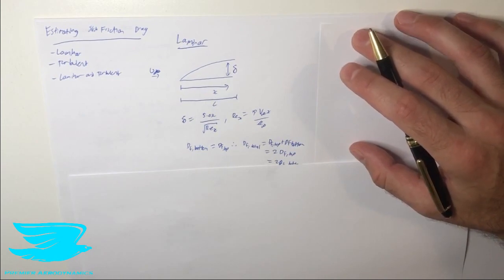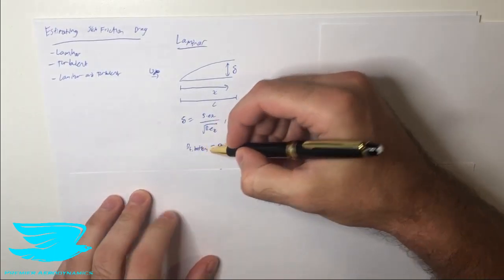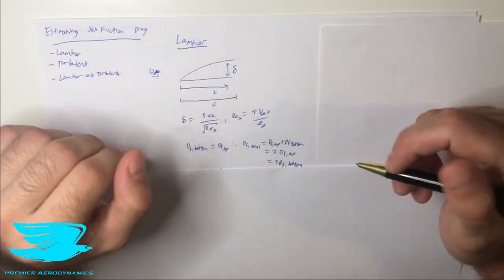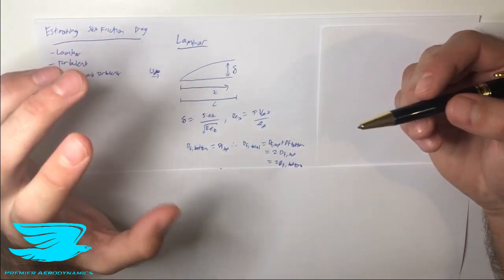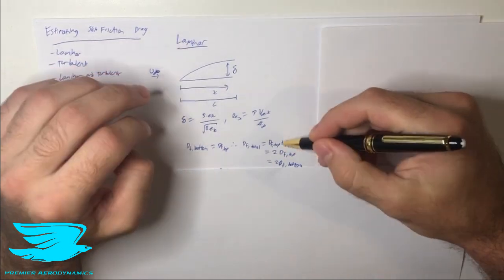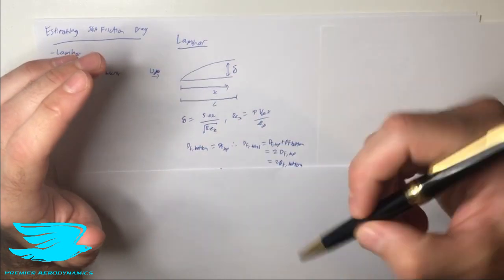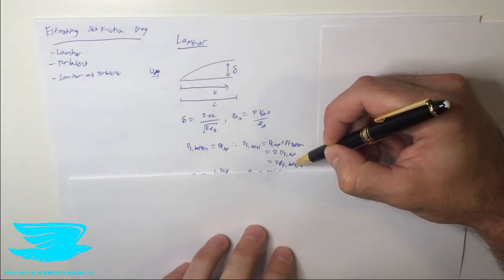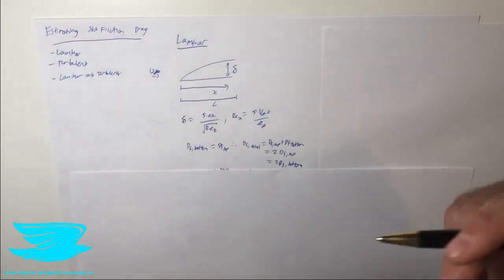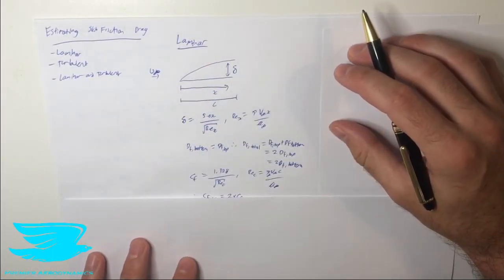Because we have the flat plate with flow going over the top and bottom, we have drag on the top and drag on the bottom, and they are equal since there's no difference between the two surfaces. The total drag for the flat plate is the drag from the top plus the drag from the bottom, which equals two times the drag from one surface. So we only need to calculate the skin friction drag on one surface and multiply it by two.